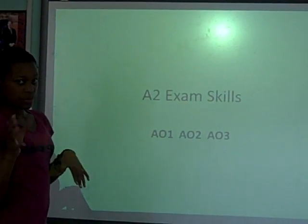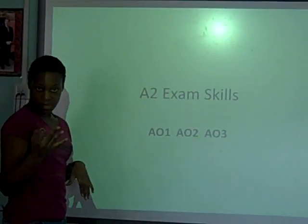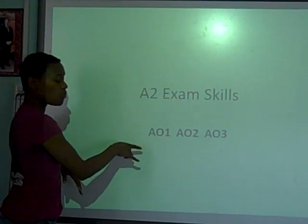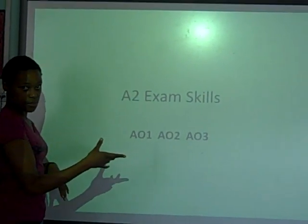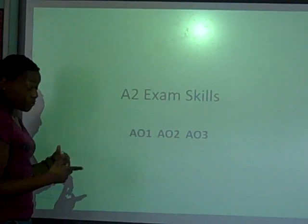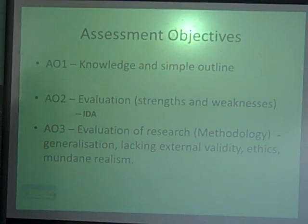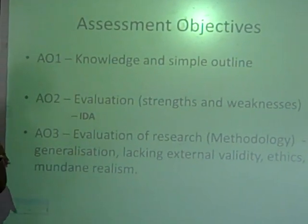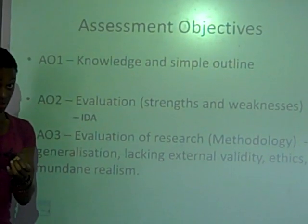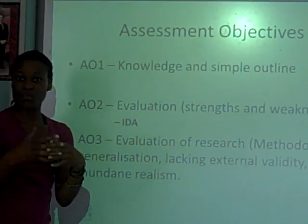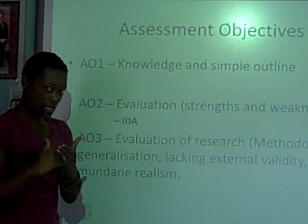We're going to look at what we call assessment objectives, and we've got three types of assessment objectives: AO1, AO2, and AO3. Do remember that this is what the examiner is looking for in your essays. To get the marks, you've got to put in what they want — you've got to meet the criteria.